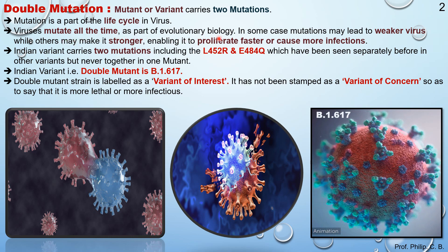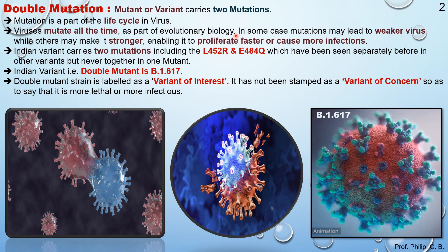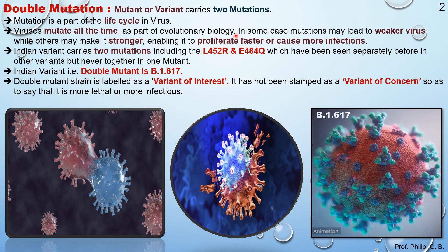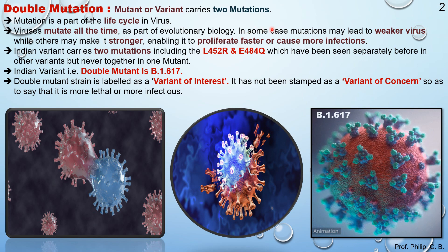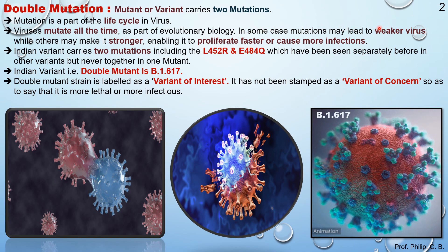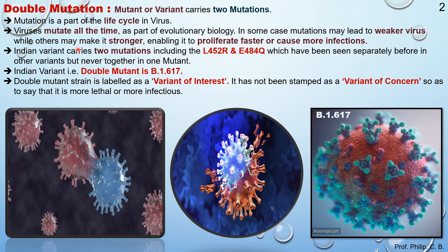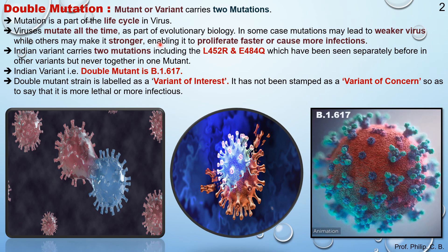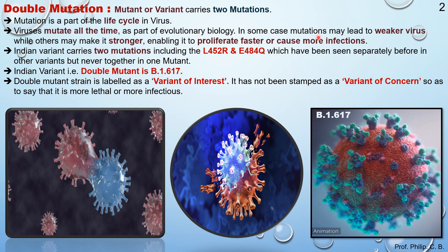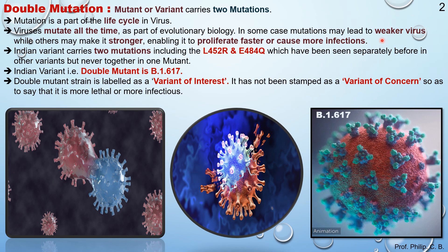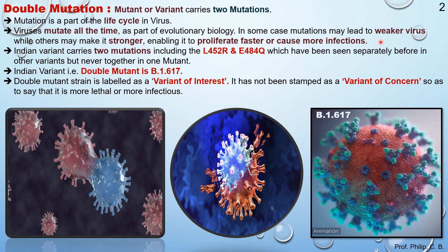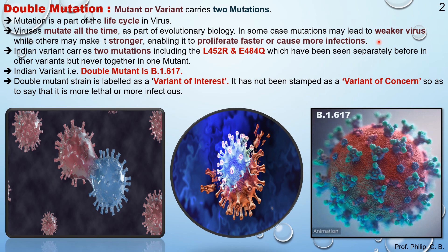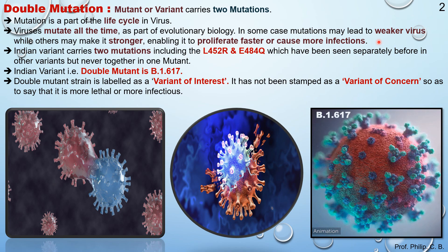Virus mutates all the time as a part of evolutionary biology — the virus always tries to sort out mutations. In some cases, mutations may lead to a weaker virus, while in other cases they may make it stronger, enabling it to proliferate faster or cause more infection, as we can see in the present scenario and as heard about with SARS and MERS viruses.